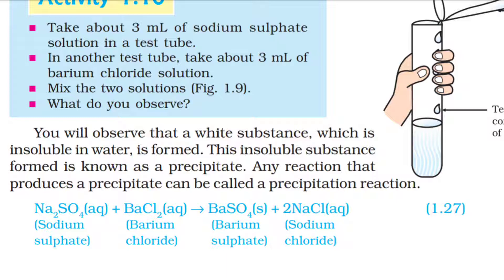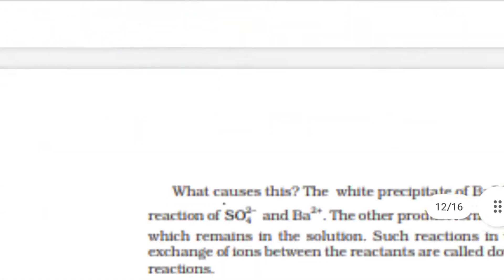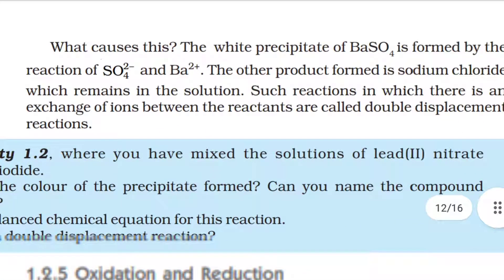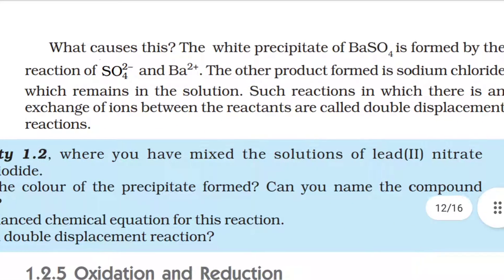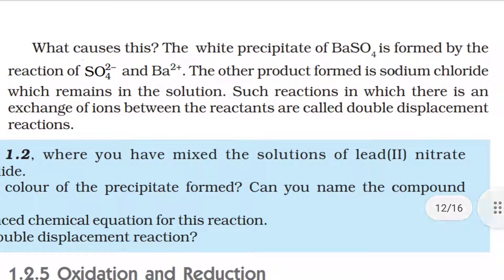Na₂SO₄ (aqueous) + BaCl₂ (aqueous) → BaSO₄ (solid) + 2NaCl (aqueous). The white precipitate of BaSO₄ is formed by the reaction of SO₄²⁻ and Ba²⁺. The other product formed is sodium chloride, which remains in solution. Such reactions in which there is an exchange of ions between the reactants are called double displacement reactions.